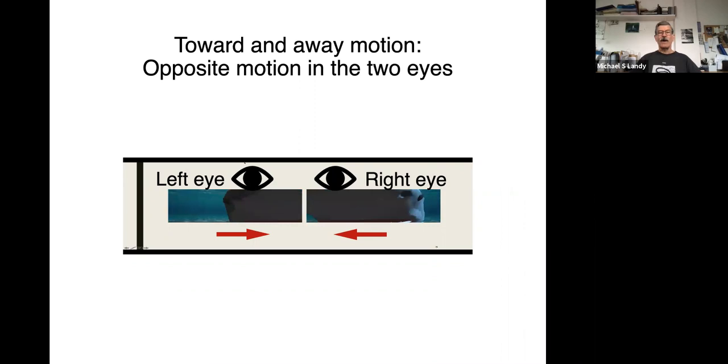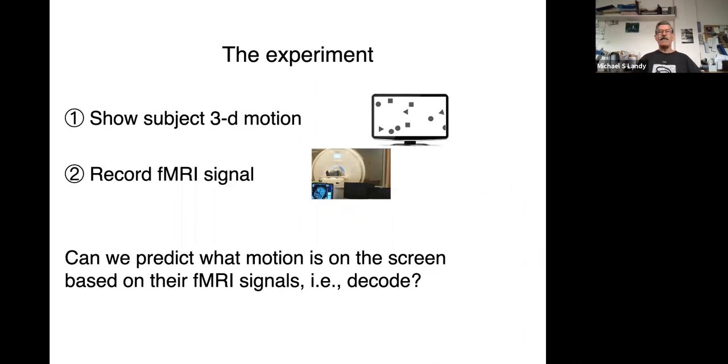So to study this, we have people look at a motion display where they're looking at one of eight different directions of motion: towards, away, rightward, leftward, right and away, left and towards, etc. And while they're looking at those directions of motion, we're recording their brain activity using functional MRI. And the question is, where in the brain is there information about the 3D direction of motion? And we look at that by trying to decode what's on the screen based on the brain responses that we measure.